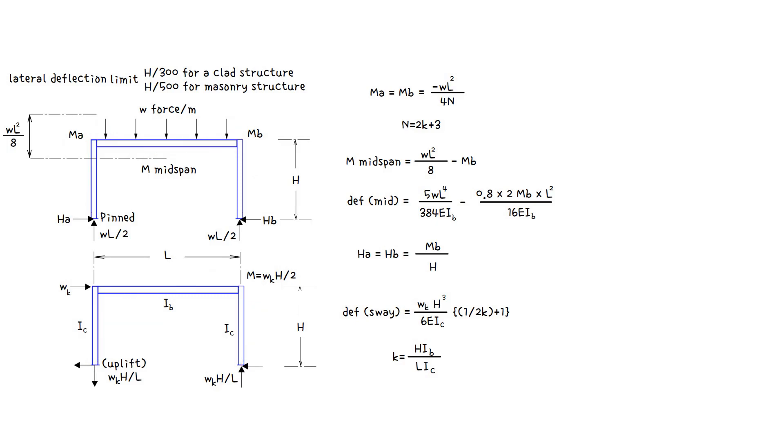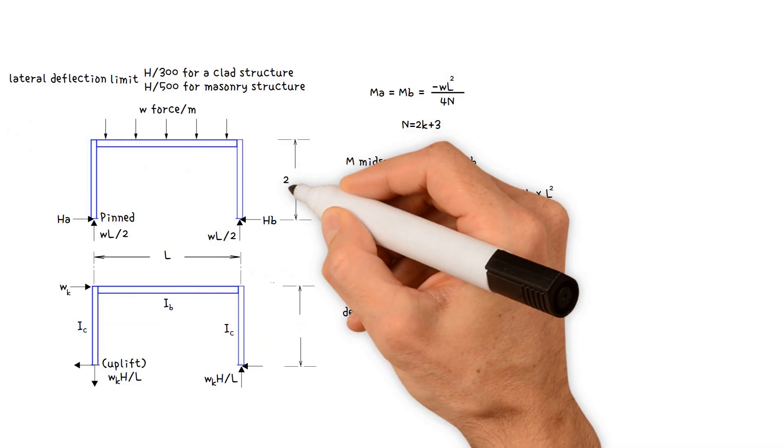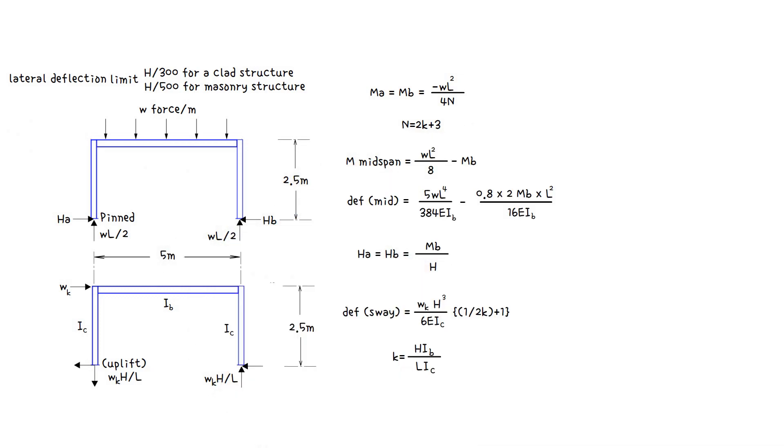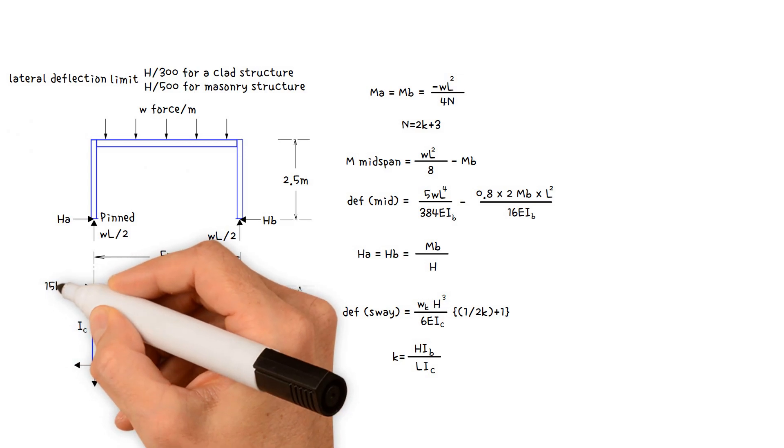Let's go through these equations with an example. We have a goal post with 2.5 meters height and 5 meters span that is subjected to a wind load of 15 kilonewtons at the eaves.